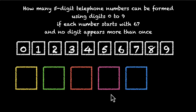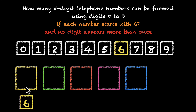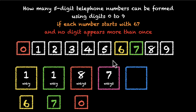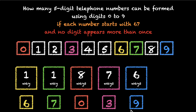So repetition is not allowed and we start with 6 and 7. Placing 6 in the first box can be done in only one way, and placing 7 in the second box can also be done in only one way. With 6 and 7 gone, we have 8 options left for the third box. Let's put in 0 — then 7 options for the fourth box. Put in 3 — then 6 options for the last box. So the total is 1 × 1 × 8 × 7 × 6 = 336 ways.